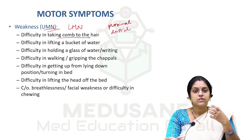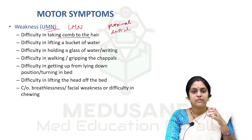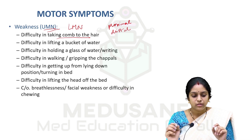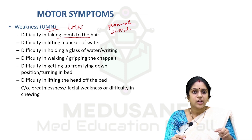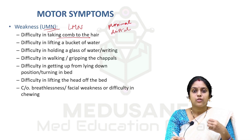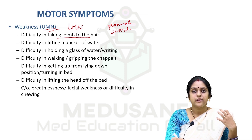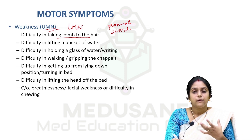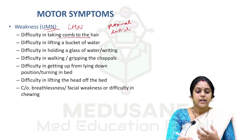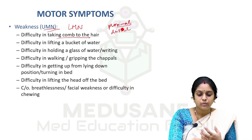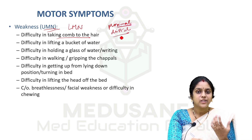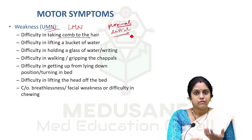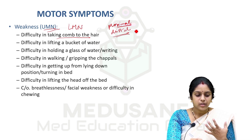The patient might also say he has difficulty holding a glass of water, is not able to write, or is not able to lift a bucket of water. All these complaints involving the upper limb will help in differentiating whether it is proximal or distal involvement.